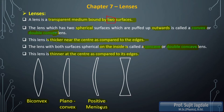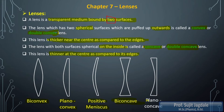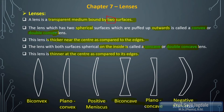The next type is bi-concave lens, because both surfaces are concave in nature. Similar to plano-convex, the next one is plano-concave: one surface is concave and another surface is plane. The last one is negative meniscus, where both surfaces are concave and tilted at one end. So these are the six types of lenses which we use in day-to-day life to study different applications of light and refraction.